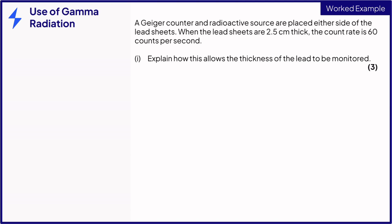Okay, part one tells us to explain how this allows the thickness of the lead to be monitored for three marks. This is an explain question, so we need to give reasons for our answers. Let's first consider what happens when the lead is too thick or too thin. We know the lead is too thick when count rate drops below 60 counts per second. Saying something similar to this gains the first mark.